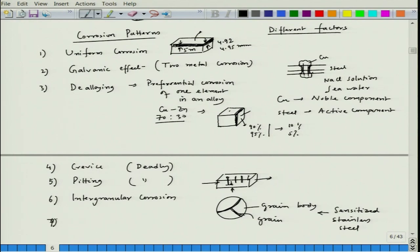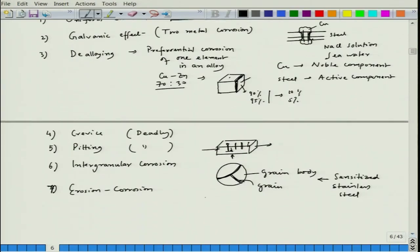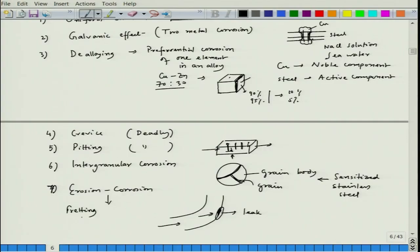Seventh is erosion corrosion. Wherever there is an erosion factor — which is mechanical in nature — in addition to an electrochemical component, we get erosion corrosion. For example, in a pipe where an emulsion is flowing through, the emulsion has the strongest erosive effect around a bend zone and that portion can leak. This gives mechanical erosion combined with corrosion. Erosion corrosion has two variants: one is fretting and another is cavitation corrosion — we will discuss both in detail.